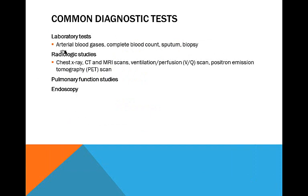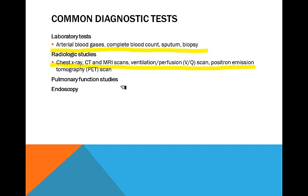Diagnostically you do arterial blood gases, a CBC, a sputum test — usually for TB — a biopsy if necessary. Start with a chest x-ray and work your way to CT scan, MRI, and other radiologic studies, as well as pulmonary function tests or endoscopy.